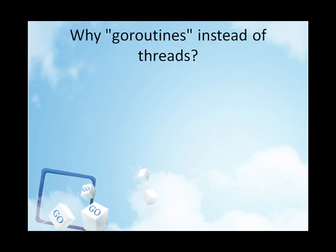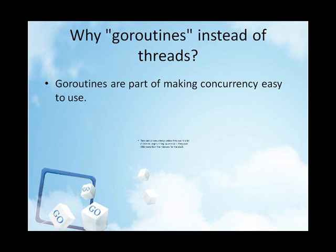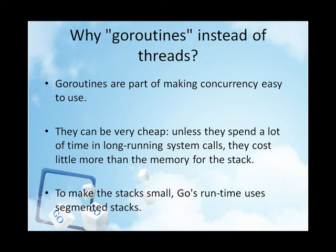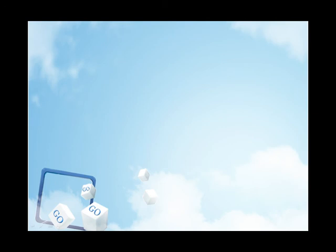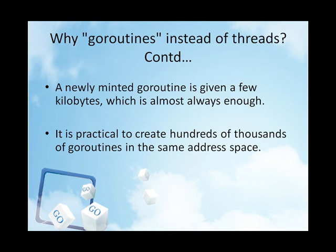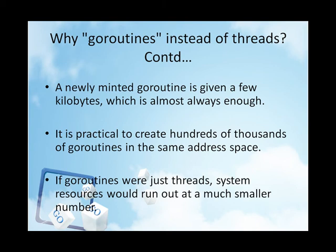Go routines are part of making concurrency easy to use. The idea, which has been around for a while, is to multiplex independently executing functions onto a set of threads. When a Go routine blocks, such as by calling a blocking system call, the runtime automatically moves other Go routines on the same operating system thread to a different runnable thread so they won't be blocked. The programmer sees none of this, which is the point. The result, which we call Go routines, can be very cheap unless they spend a lot of time in long-running system calls. They cost little more than the memory for the stack.